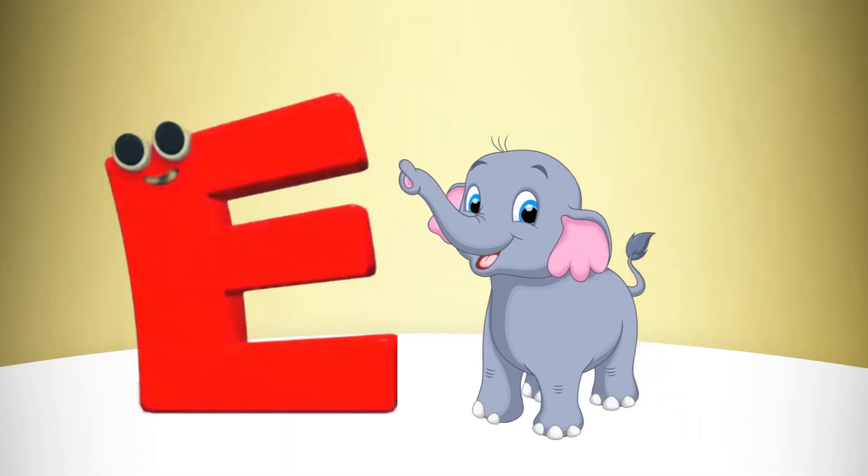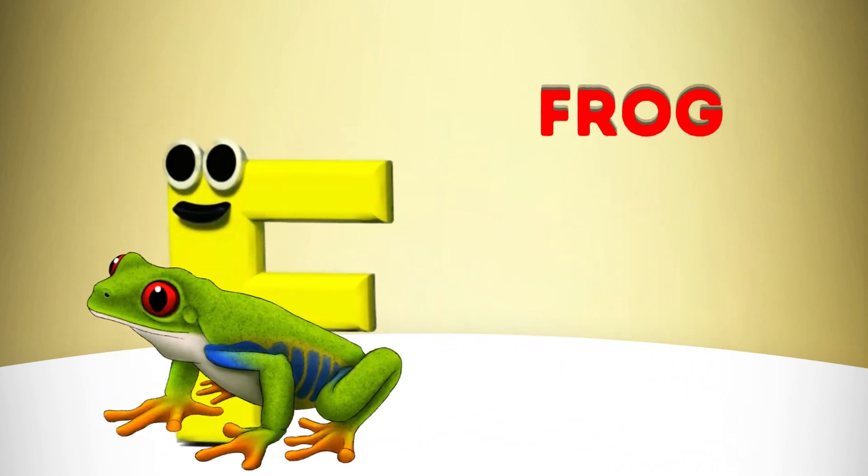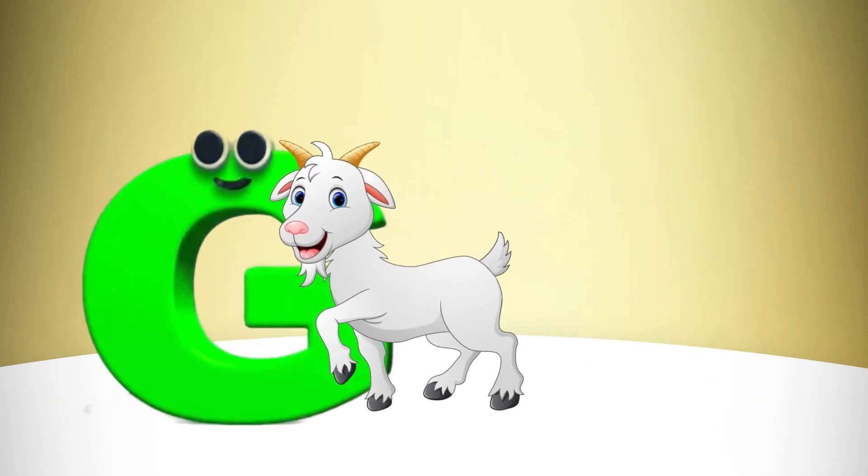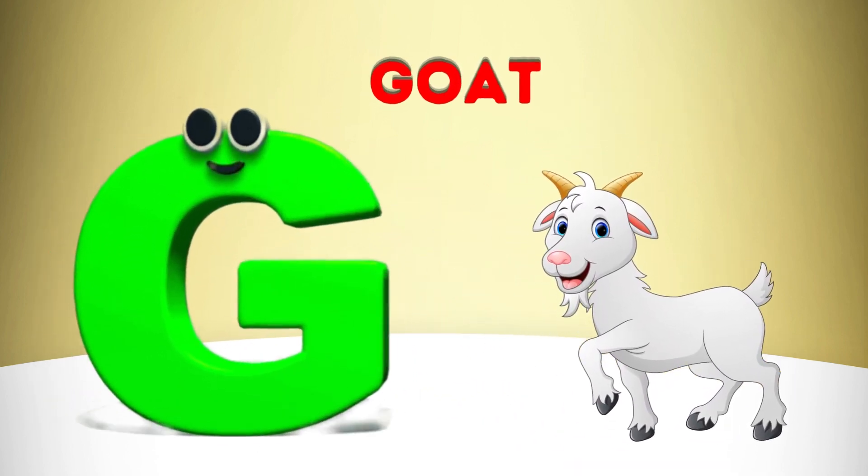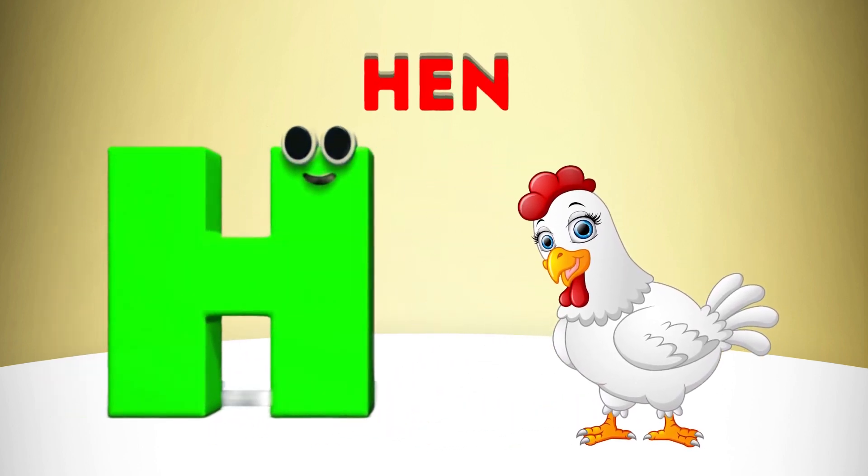E is for Elephant, E-E-Elephant. F is for Frog, F-F-Frog. G is for Goat, G-G-Goat. H is for Hand, H-H-H-Hand.